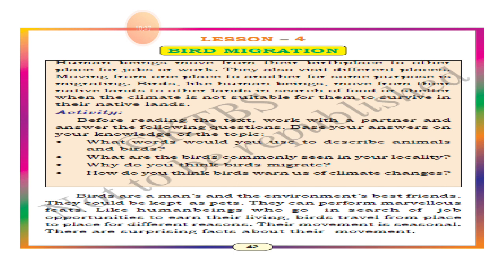The seasonal abundance of insects as food and greater day length allowed birds to raise more offspring than their stay-at-home tropical relatives. As their breeding zone moved northward during periods of glacial retreat, the birds continued to return to their tropical homes as winter weather and declining food supplies made life more difficult.